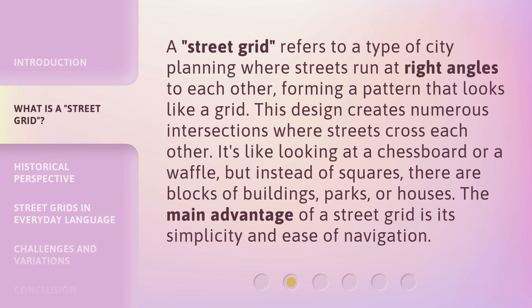A street grid refers to a type of city planning where streets run at right angles to each other, forming a pattern that looks like a grid. This design creates numerous intersections where streets cross each other. It's like looking at a chessboard or a waffle, but instead of squares, there are blocks of buildings, parks, or houses. The main advantage of a street grid is its simplicity and ease of navigation.